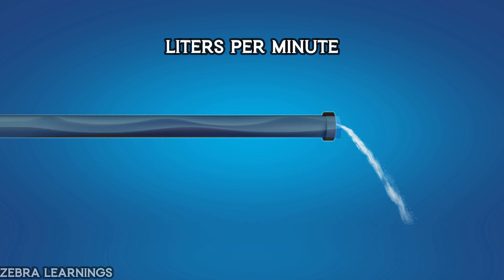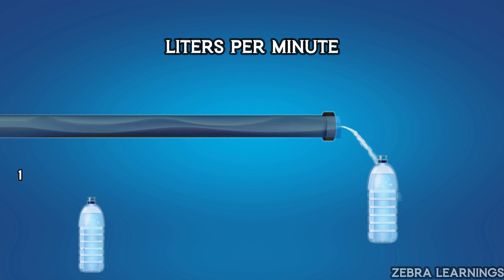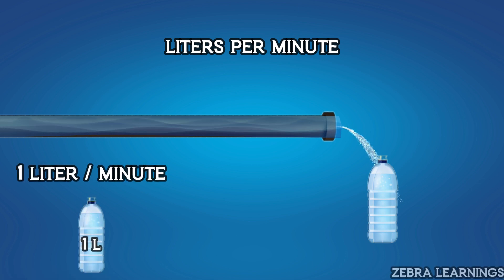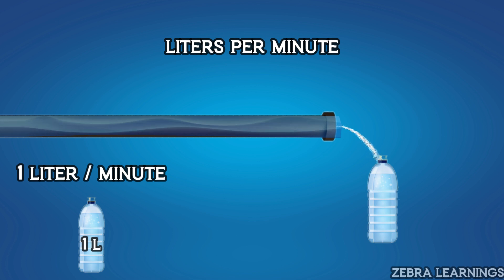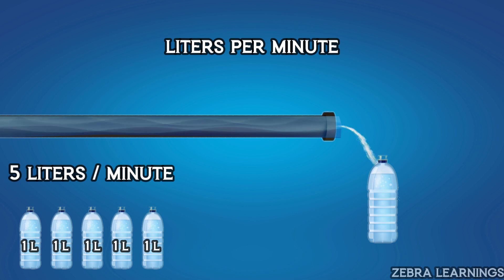Liters per minute is similar to the 2 units above. 1 liter per minute means that 1 liter of water flows through the pipeline in 1 minute. 5 liters per minute means that 5 liters of water flow through the pipeline in 1 minute.